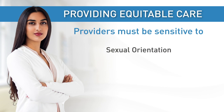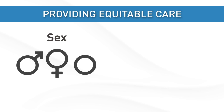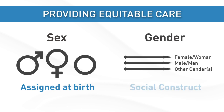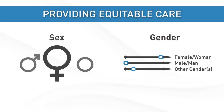Neurology providers need to understand issues relating to patients' sexual orientation and gender identity in order to provide equitable clinical care. Sex is assigned at birth and includes male, female, or intersex. In contrast, gender is a social construct. Gender identity refers to a person's sense of being a woman, man, or something else on the gender spectrum.